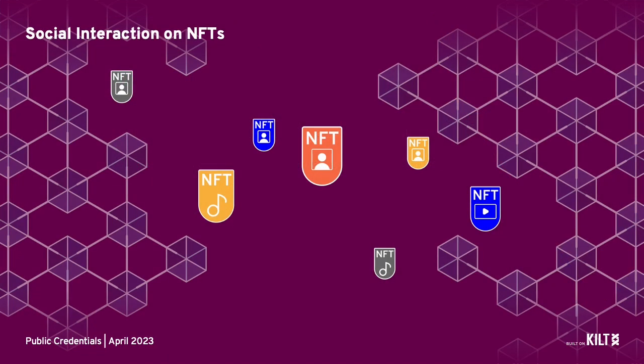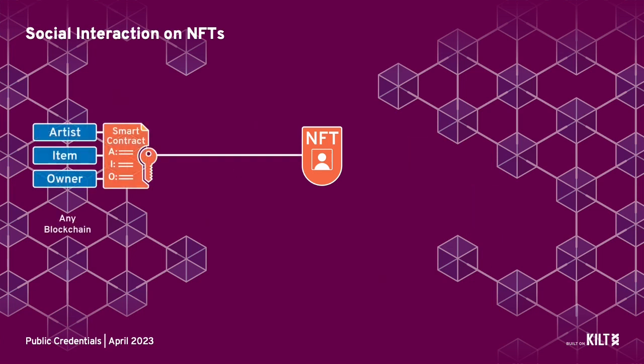NFTs are unique digital assets that have become popular as a way for creators to sell their digital works of art, music, and other creative content. Each NFT is linked to a smart contract sitting on a blockchain. The smart contract holds and manages information about that NFT, such as the artist, the NFT item, and the owner. So if Mike looks at this NFT on a trading platform, he can see it was created by Haruto, is a manga NFT, and is currently owned by Ben.